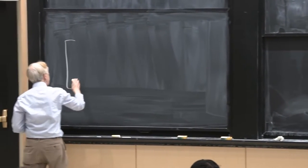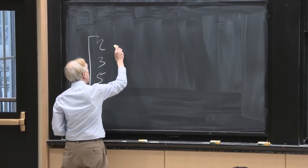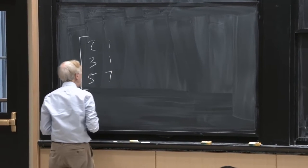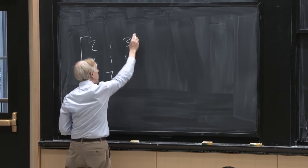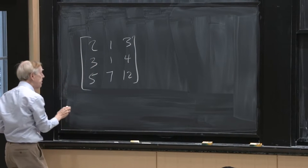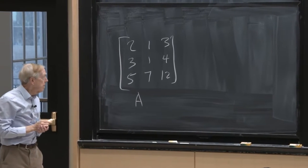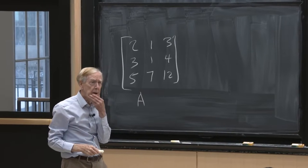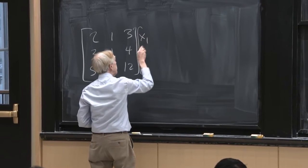Let me take a matrix — say 2, 3, 5 / 1, 1, 7 / 3, 4, 12 — I'll always call matrices A. So first step is A times x, a vector. I multiply A by x1, x2, x3. How do I look at that answer?